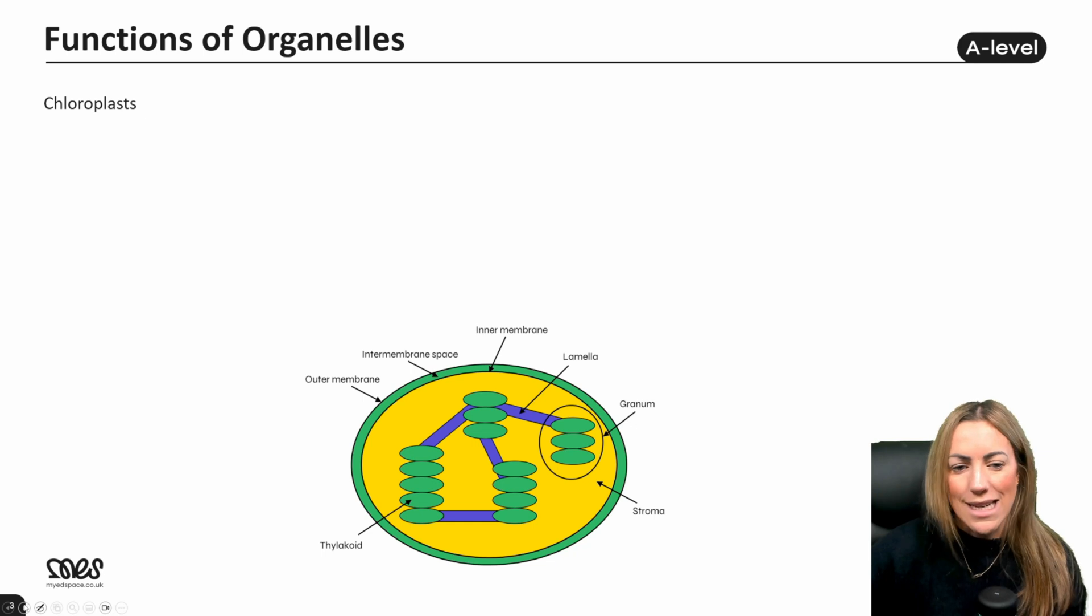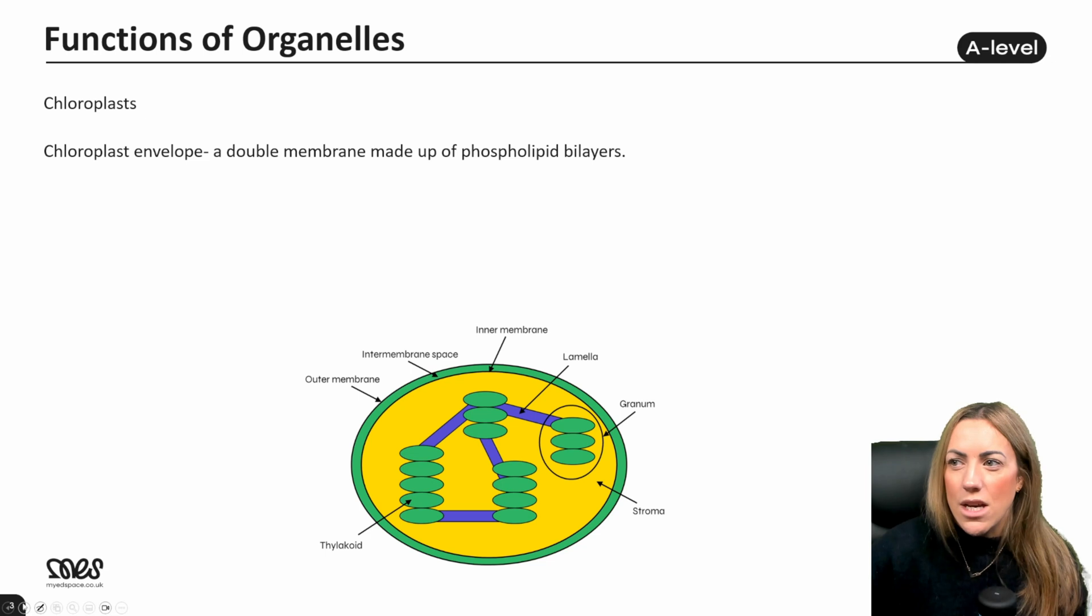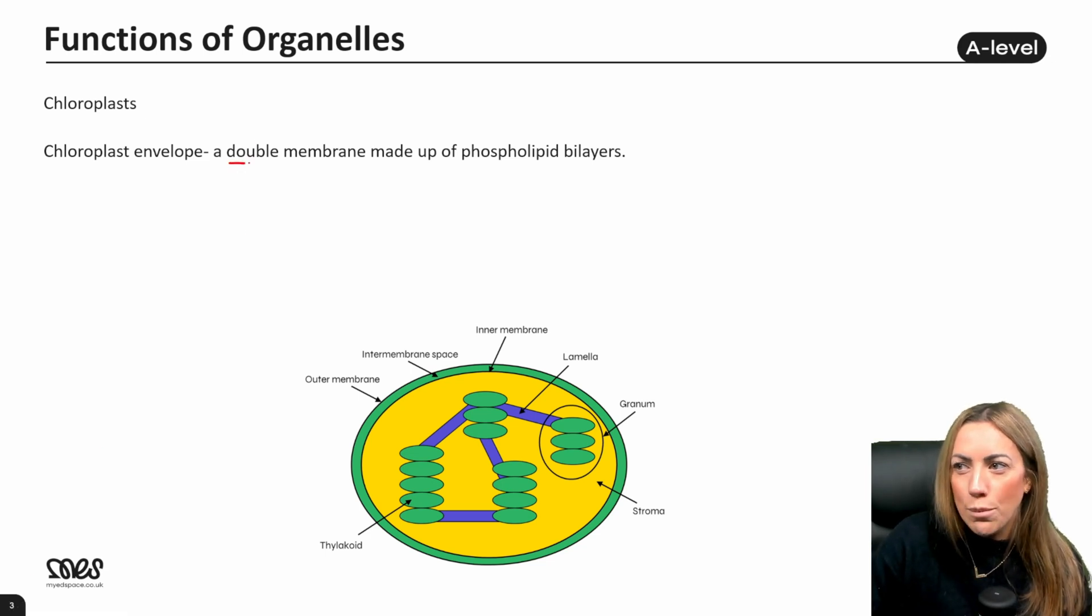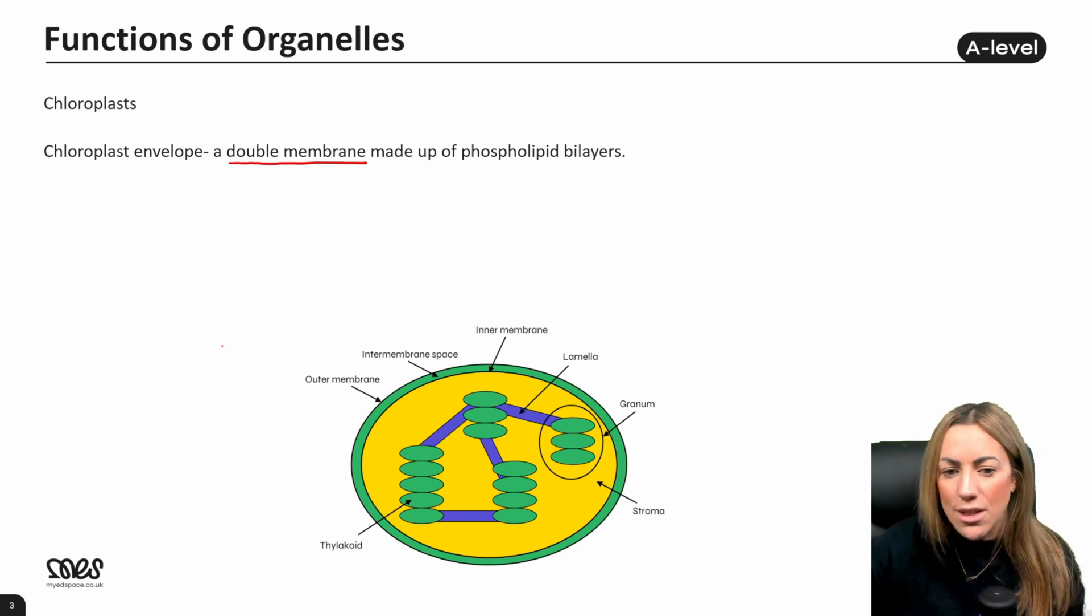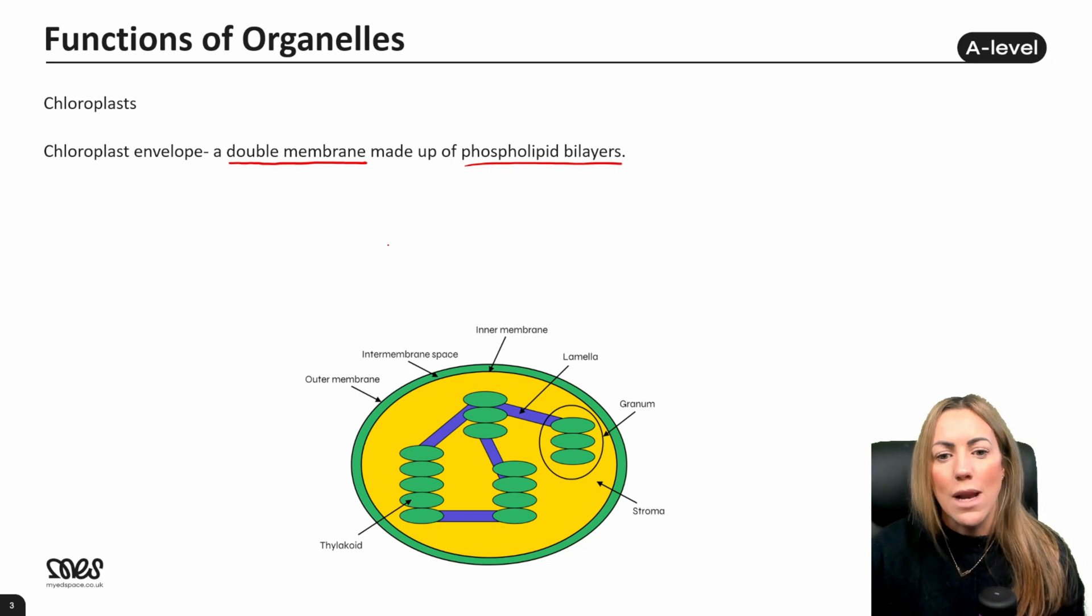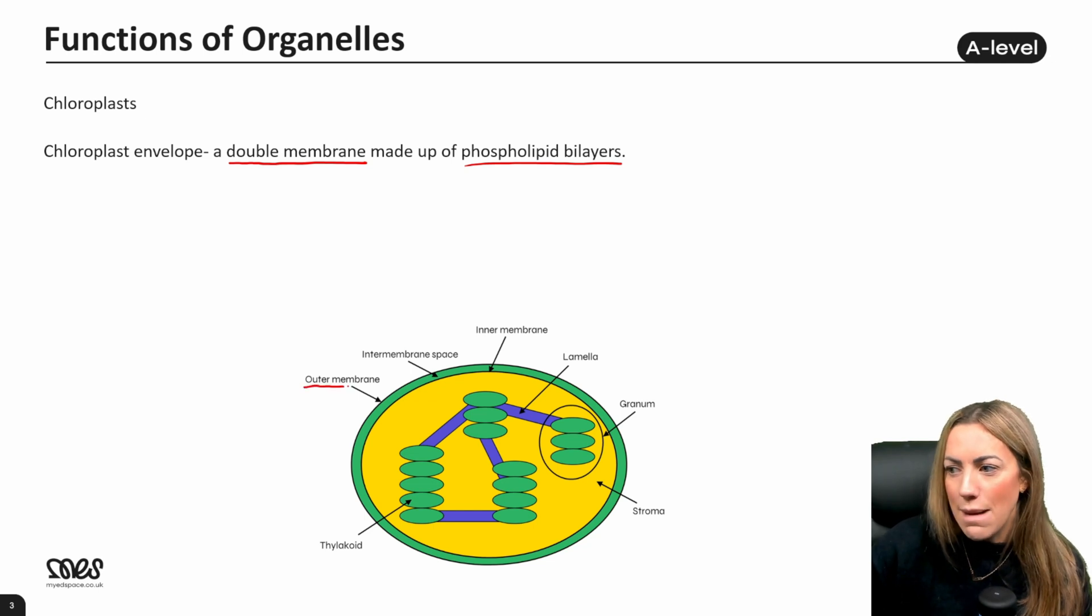So here is a chloroplast. Have a look at the diagram down the bottom. You'll do this again in year 13 when you do photosynthesis, but in year 12 we do learn the structure. The chloroplast envelope is a double membrane. So the nucleus has a double membrane, mitochondria have a double membrane, chloroplasts have a double membrane, and each of those membranes consists of a phospholipid bilayer. You can see here, the outer membrane is a phospholipid bilayer and the inner membrane is another phospholipid bilayer.